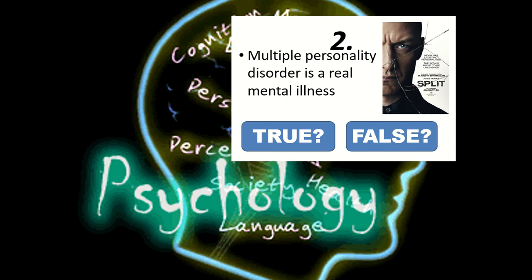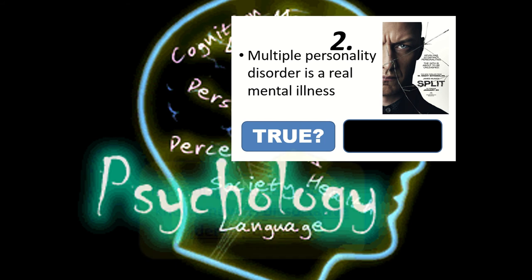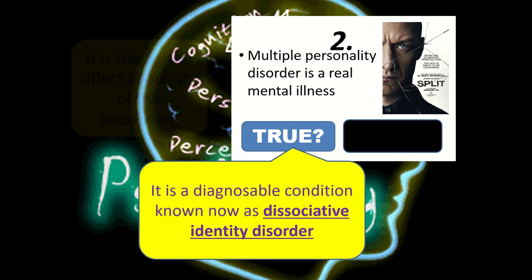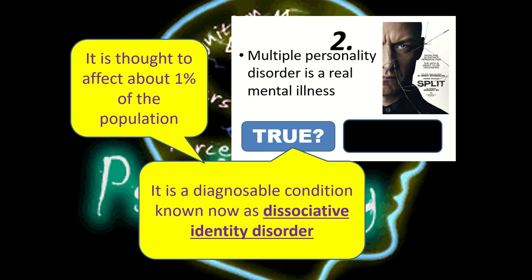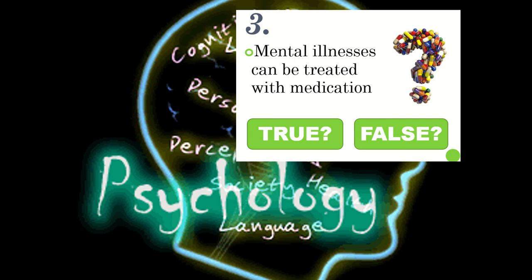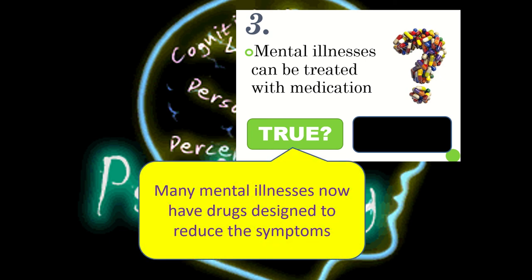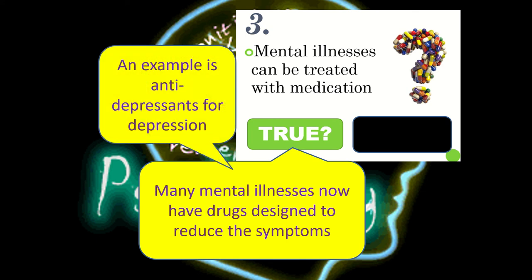Statement two: multiple personality disorder is a real mental illness — that is true. It's not called multiple personality disorder; it is known as dissociative identity disorder. It is a clinically diagnosable condition that is very, very rare, occurring in only about one percent of the population. Statement 3: mental illnesses can be treated with medication — this is absolutely true. These days there are lots of mental illnesses which have drugs specifically designed to treat them and reduce the symptoms. For example, if you get diagnosed with clinical depression, you might be given an antidepressant called Prozac or fluoxetine.